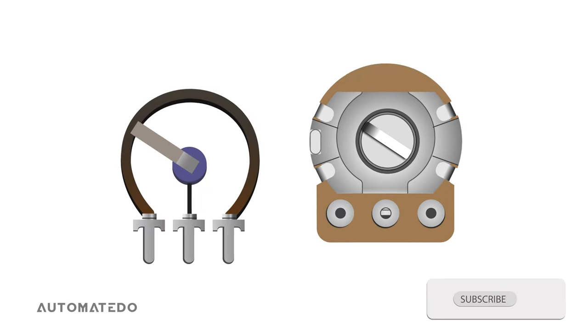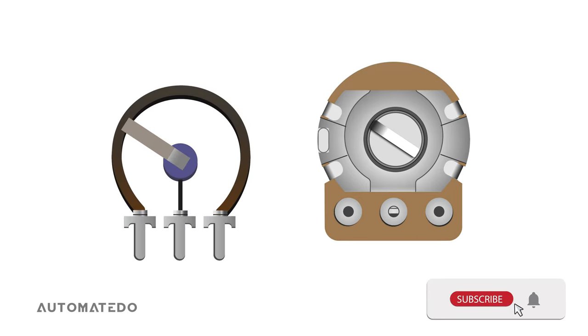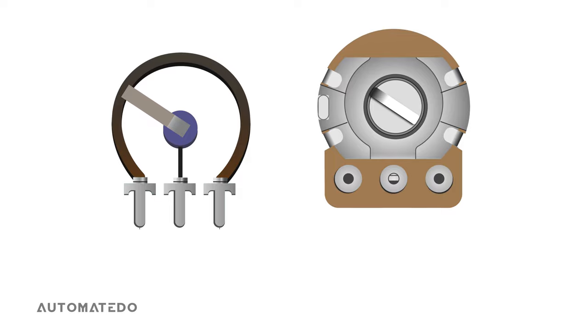First, it is better to remove the potentiometer cover to see the inner structure as well. A potentiometer has three terminals or connection points among two are fixed and one is variable.